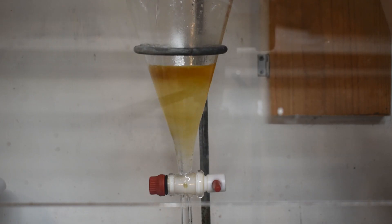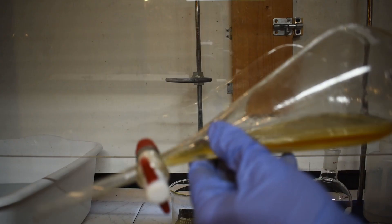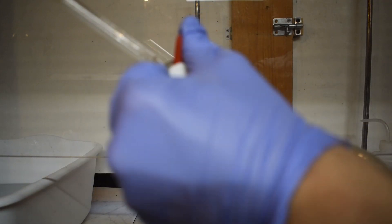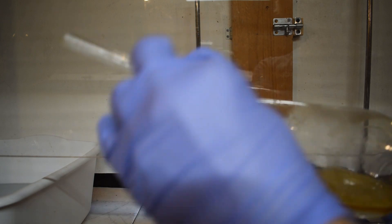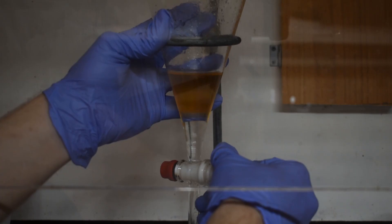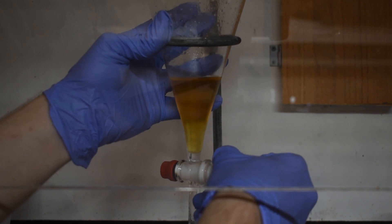To our isoamyl acetate, I then added a sodium bicarbonate solution and shook it around a little bit to remove any leftover acids there may be. I again discarded the bottom layer, and we're now left with some isoamyl acetate that's obviously not very pure.